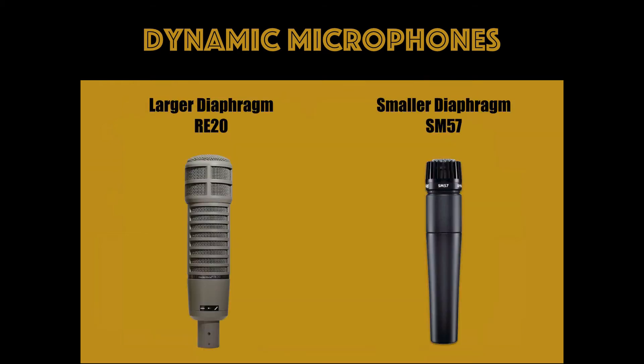We now know the difference between these two types of dynamic microphones, but there are also variations of each one. For example, there are both small and large diaphragm moving coil microphones, which respond differently to different frequencies. Large diaphragm dynamic microphones, such as the RE20, have a larger moving coil element than the SM57, and therefore are more accustomed to picking up lower frequencies. This is why this microphone is so popular in radio, because it picks up the fundamental lower frequencies of the human voice and is less sensitive to room noise like air conditioning and chair squeaks.